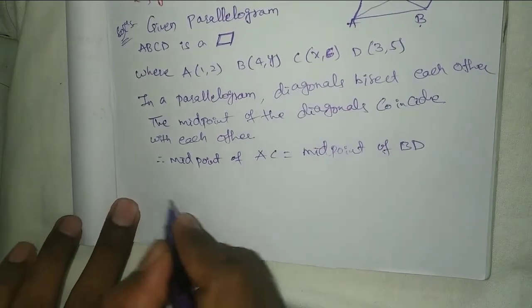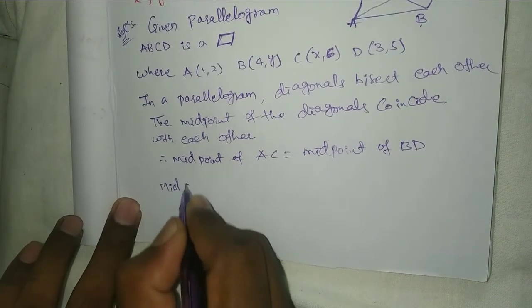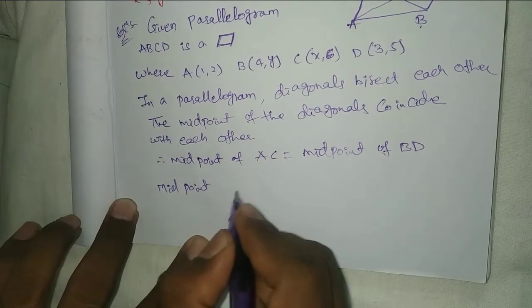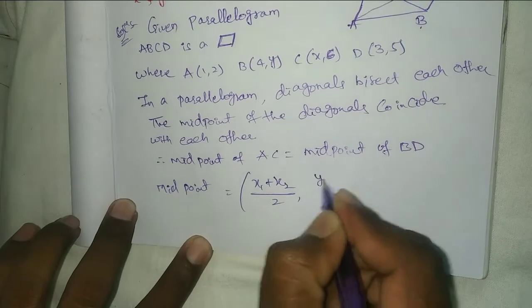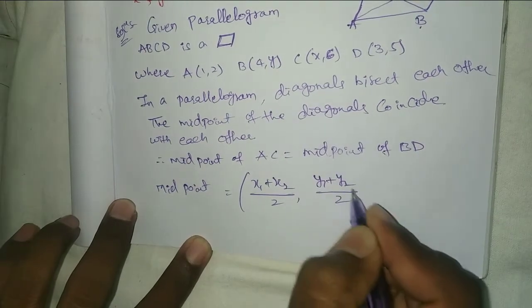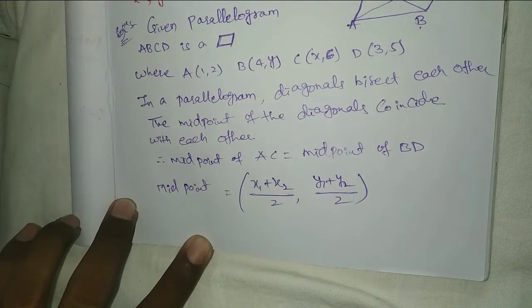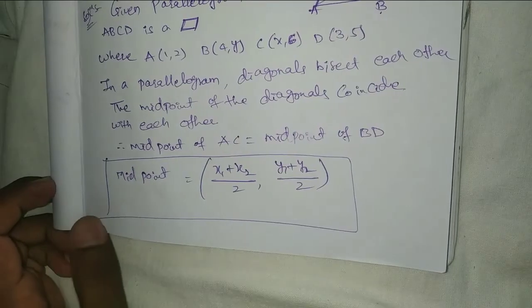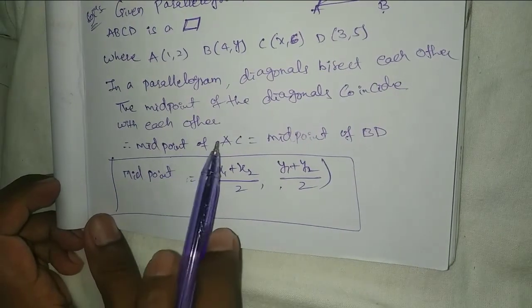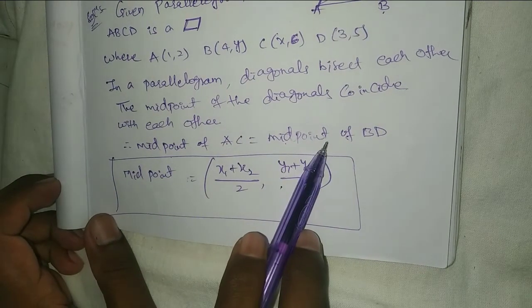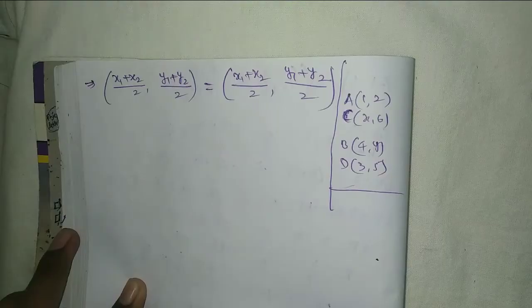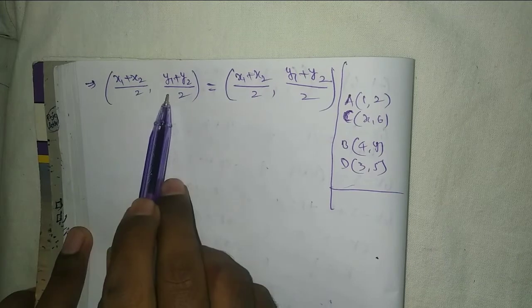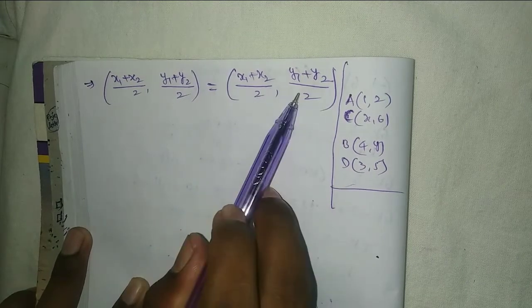The midpoint formula is (x₁+x₂)/2, (y₁+y₂)/2. This is the midpoint formula. We will find the midpoint of AC and the midpoint of BD using this formula.